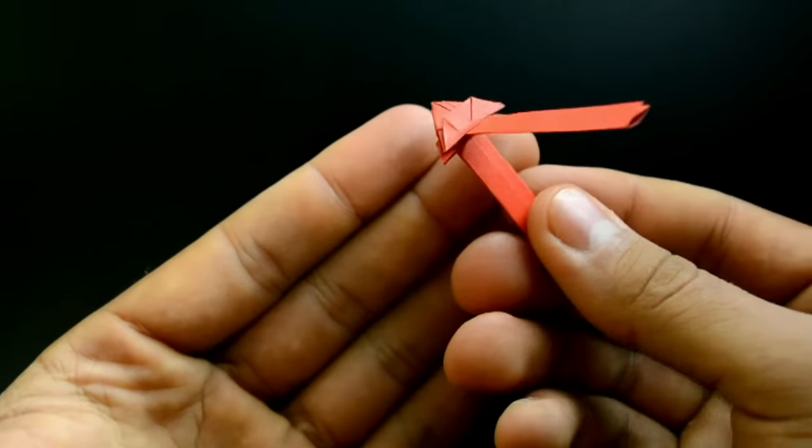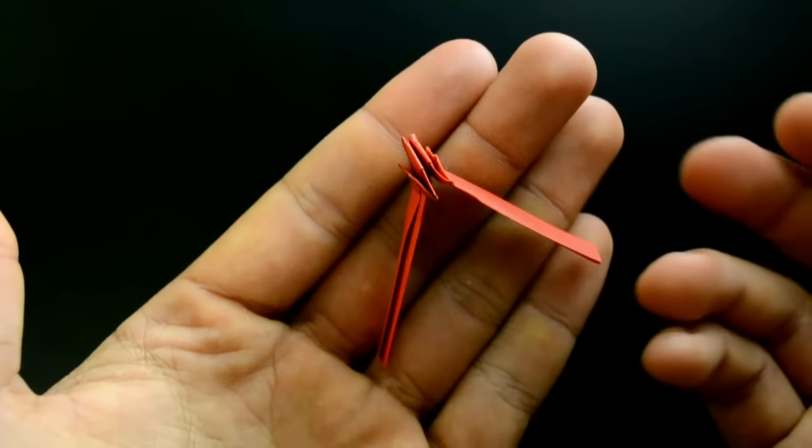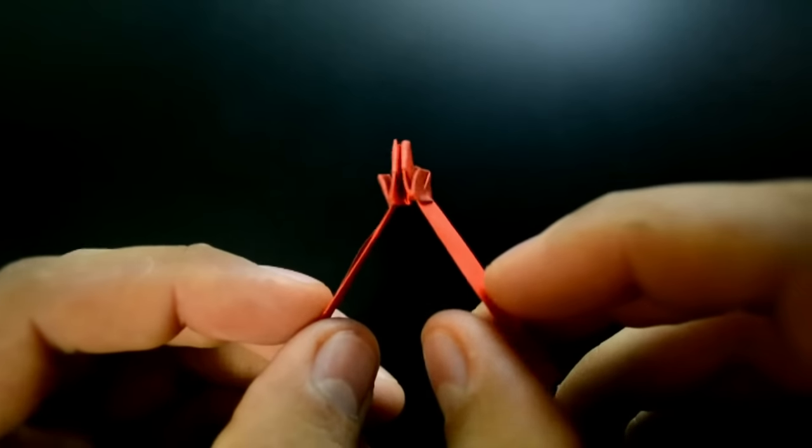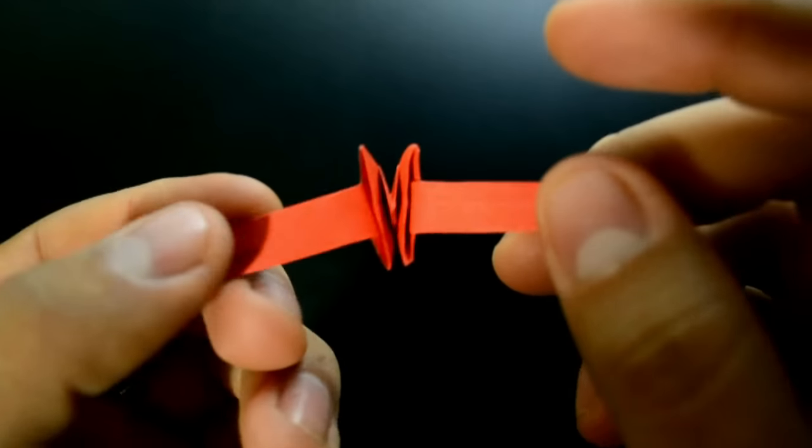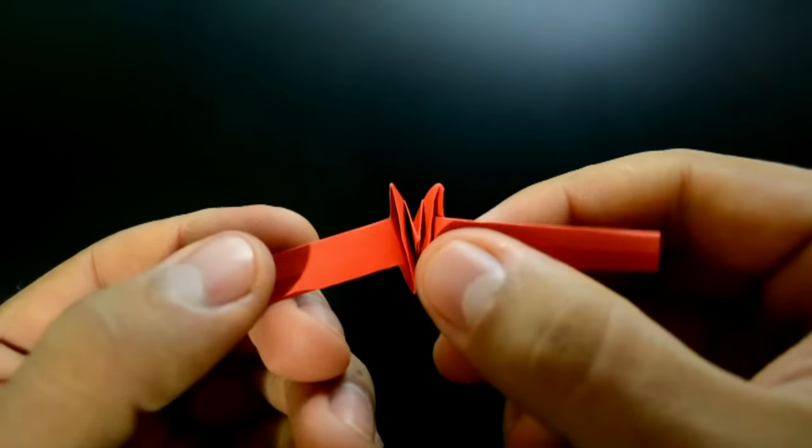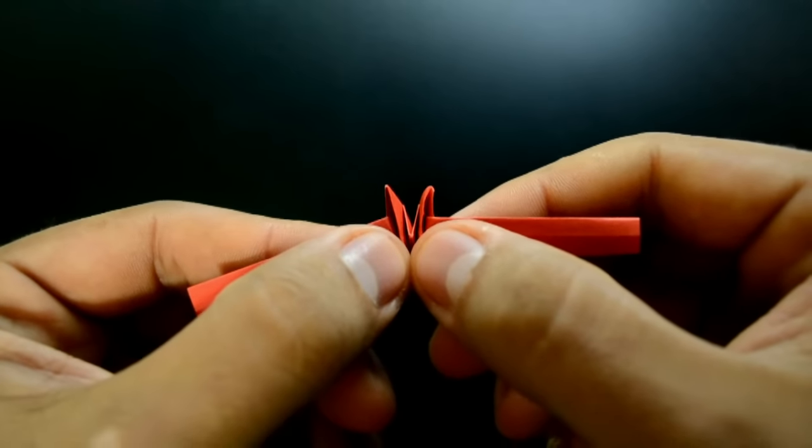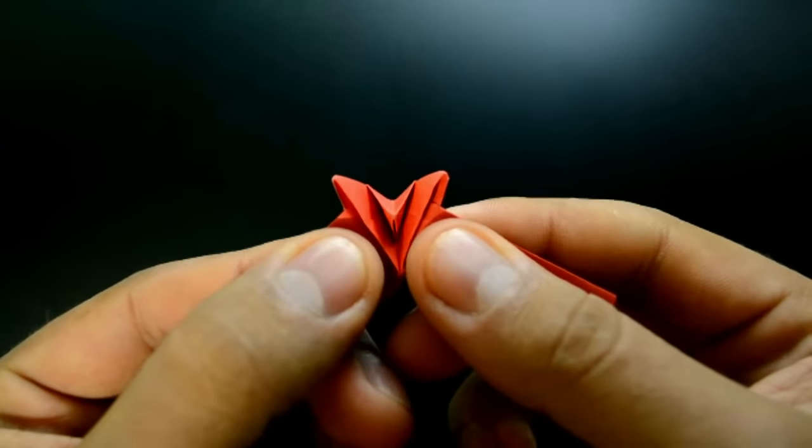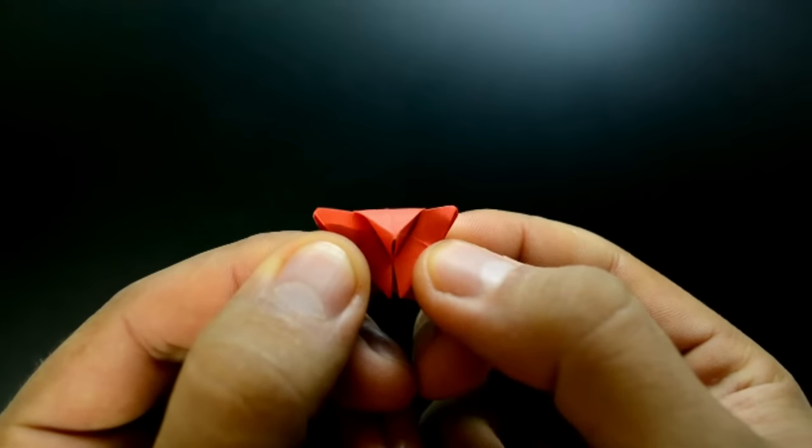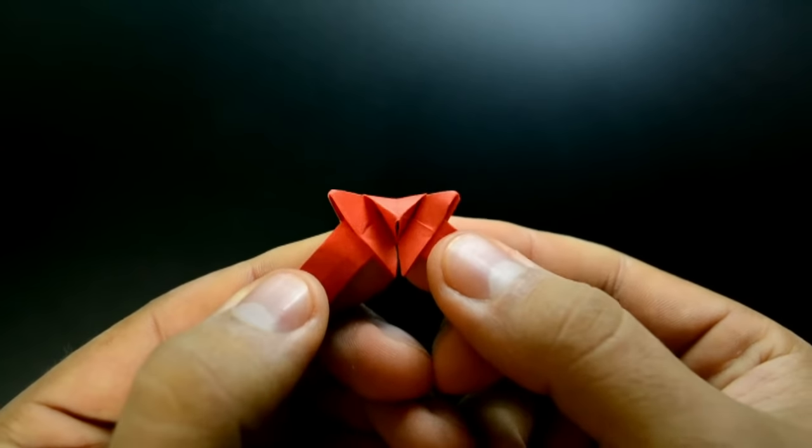And in the end, we have something like this. Now the details. Holding the paper that way, we'll open only the upper side, giving the paper a butterfly shape.